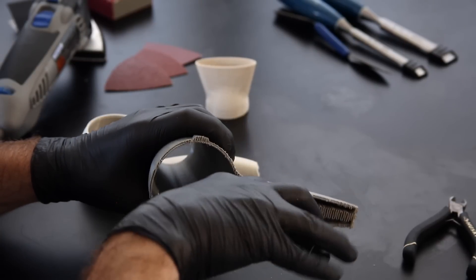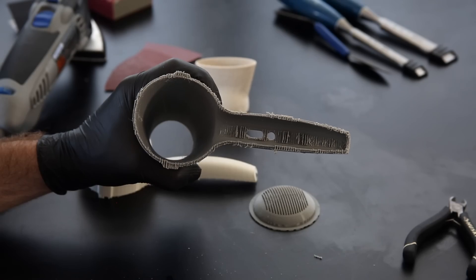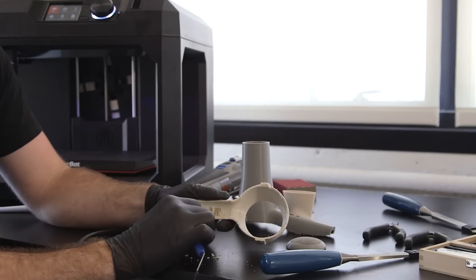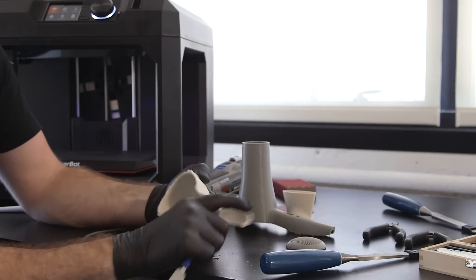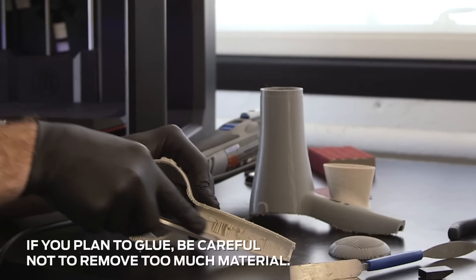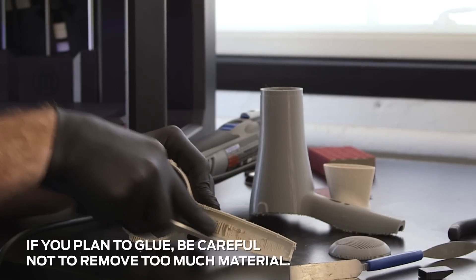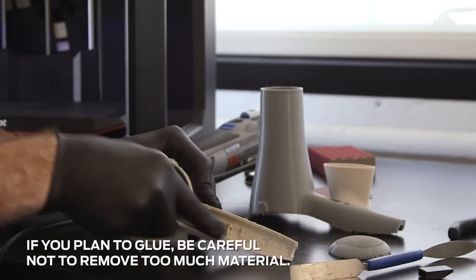Take care around edges and seams. Cleaning the edges will ensure better alignment of model components if you plan to glue later on. If you plan to glue the model, be careful not to remove too much material, or you will increase the size of your seams and will need to use filler in order to hide them after gluing.